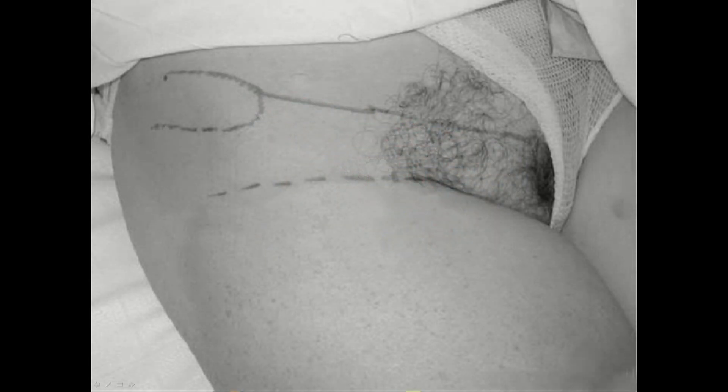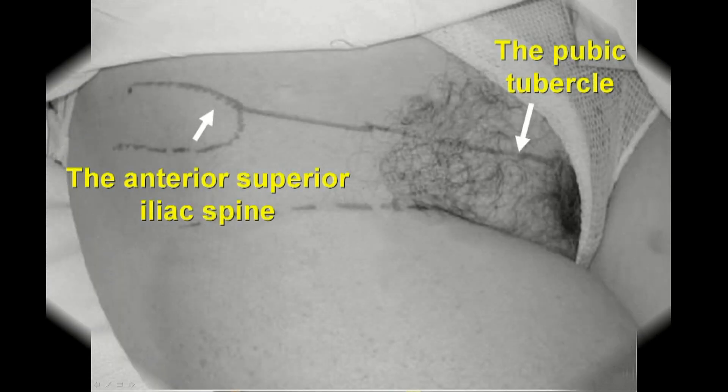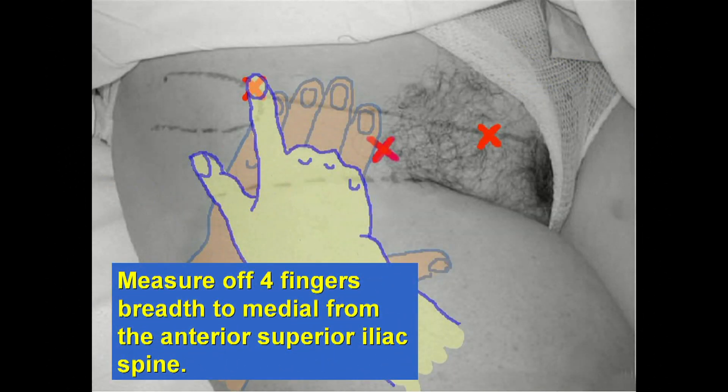The only consistent superficial anatomical markers for the femoral nerve are the anterior superior iliac spine and the pubic tubercle, which indicate the anchor points of the inguinal ligament. The femoral nerve has a remarkably consistent position relative to these bony points, and they are not subject to variation between individuals.